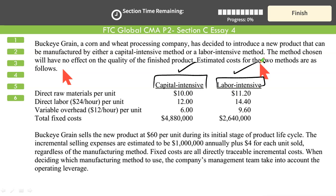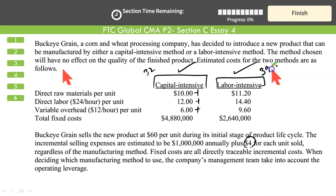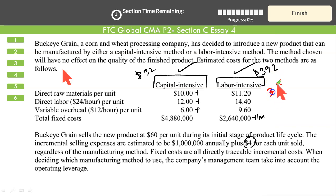Let's examine the costs under each method. For capital intensive: material plus labor plus variable overheads plus $4 selling = 10 + 12 + 6 + 4 = $32 variable cost per unit, with fixed costs of $4.88M + $1M = $5.88 million. For labor intensive: 11.2 + 14.4 + 9.6 + 4 = $39.2 variable cost per unit, with fixed costs of $2.64M + $1M = $3.64 million.